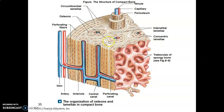Compact bone has cells and extracellular matrix. We have four types of cells: osteoprogenitor cells, which are stem cells that mature and become osteoblasts. Osteoblasts lay down osteoid, which forms the matrix of bone. After laying down osteoid, osteoblasts become osteocytes, which are housed in lacunae and can be reactivated to lay down bone whenever needed.